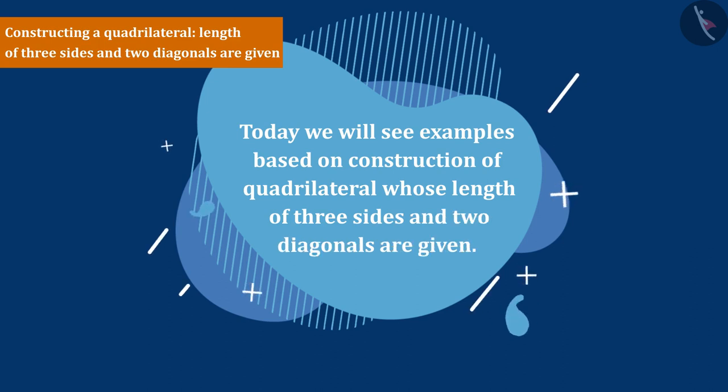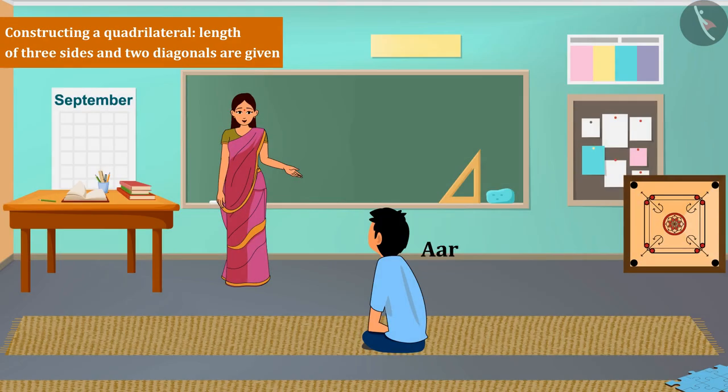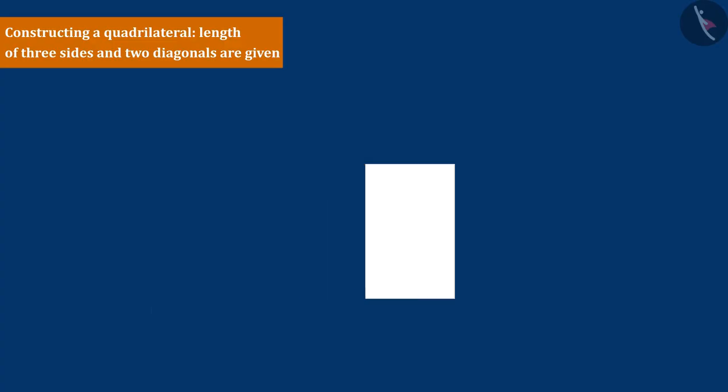This is Arav in his drawing class. His teacher asked him to make this figure with the help of some origami sheets, glue, and scissors.